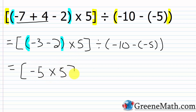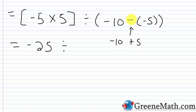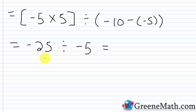Then we're dividing by the quantity (-10 - (-5)). Negative five times five — negative times positive is negative, five times five is 25 — so that's negative 25. For the divisor: negative 10 minus negative five is negative 10 plus five. The sign is negative, 10 minus five is five, so that's negative five. Now we have negative 25 divided by negative five. Negative divided by negative is positive, 25 divided by five is five. The answer is five.